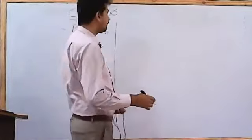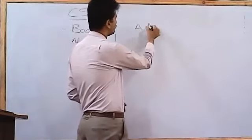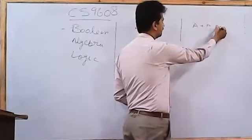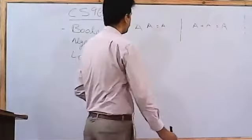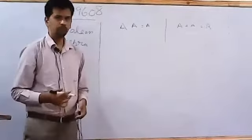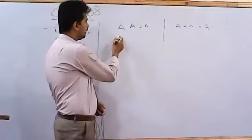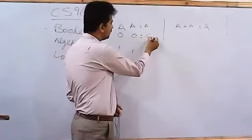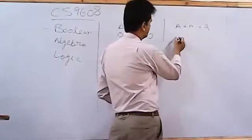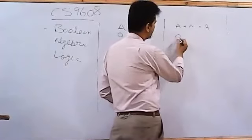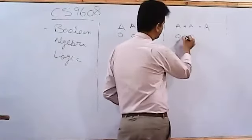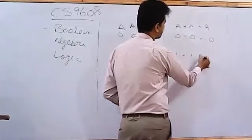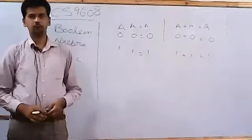The first one I am picking is the idempotent law, which is the third on your books. A dot A equals A and A plus A also equals A. Now, if I want to make the truth table of that, I know that the value of A can either be 0 or 1. And multiplying that by itself would only give me the same value. The additive part of this, the value of A can either be 0 and 1 and adding that to itself can always be 0 and 1 plus 1 is always 1. That was the idempotent law.